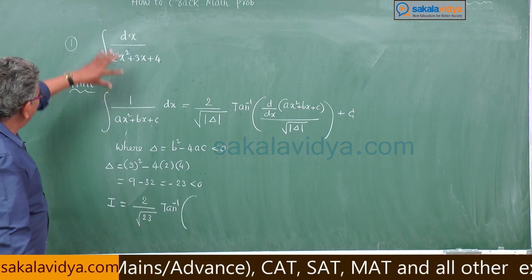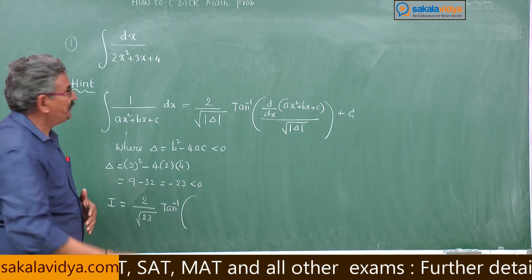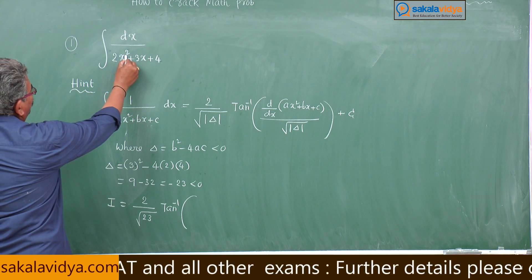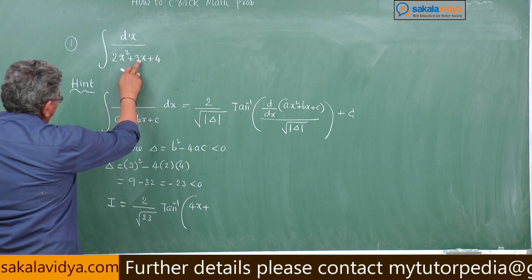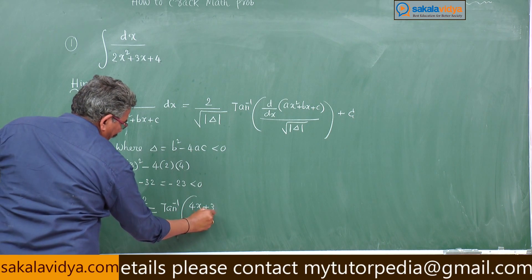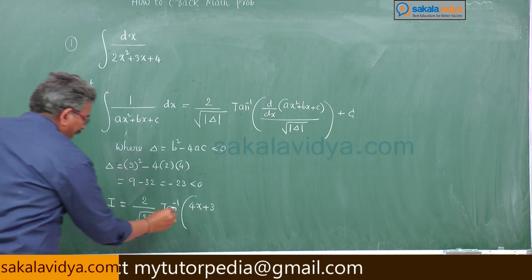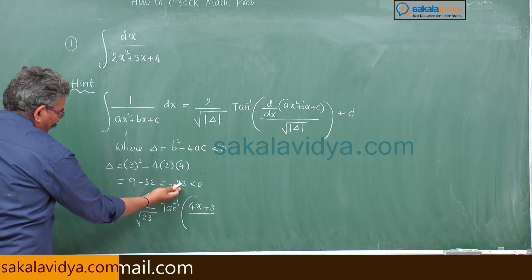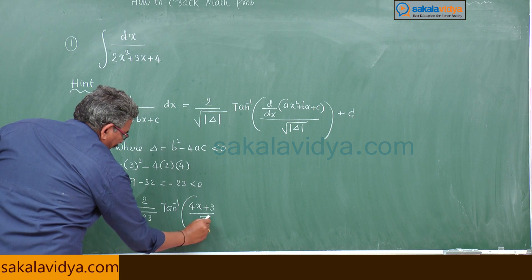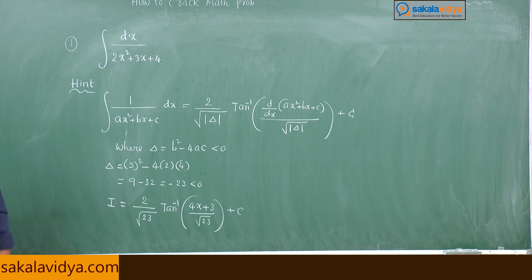That means, derivative of 2x² + 3x + 4, very simple: 2x×2 = 4x plus derivative of 3x is 3, 4 derivative is 0. By root of mod delta = √23. So this is the shortcut. I hope you might have followed.